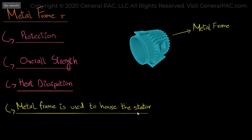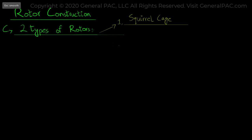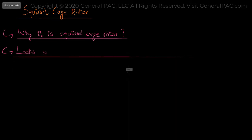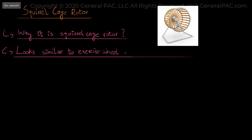Now let's move on to the rotor construction parts. As discussed previously, we have two types of rotors: the squirrel cage rotor and the phase wound rotor. Now the first thing that strikes about this is why is it called a squirrel cage rotor? It is because the construction looks similar to an exercise wheel of a hamster or a squirrel.